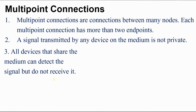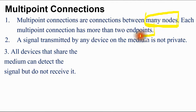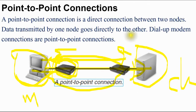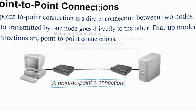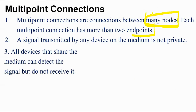Multi-point connections are connections between many nodes. Each multi-point connection has more than one endpoint. Previously we saw a direct connection between two nodes; now we are seeing multiple nodes. Each multi-point connection has more than two endpoints. A signal transmitted by any device on the medium is not private.